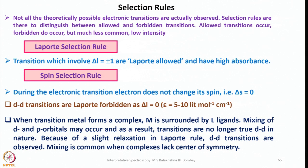The first is the Laporte selection rule: the transition should involve ΔL = ±1. If that condition is met, transitions are called Laporte-allowed and have high absorbance. During electronic transition, the azimuthal quantum number should change — ΔL should not be zero.